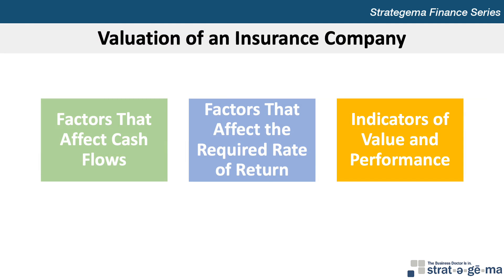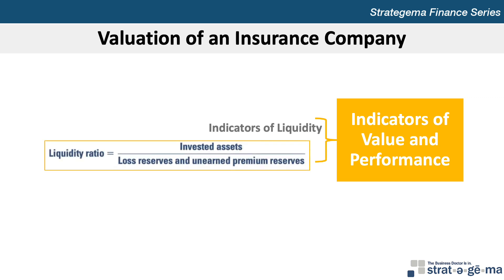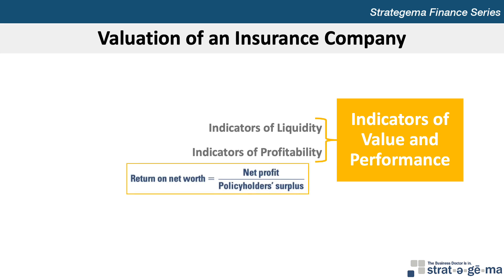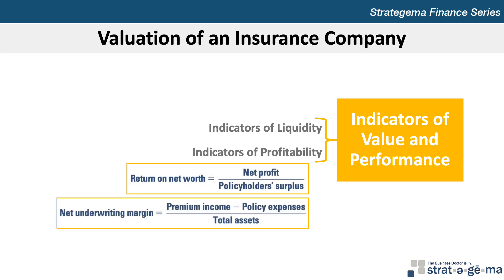The common indicators of value and performance for insurance companies include liquidity and profitability. An insurance company's liquidity can be measured as the invested assets divided by the loss reserves and unearned premium reserves. The higher the ratio, the more liquid the company is. The profitability of insurance companies is often assessed using the return on net worth or policyholder's surplus, calculated as net profit divided by the policyholder's surplus. Another common measure for insurance companies is the underwriting gains, calculated as premium income less policy expenses, divided by total assets. When policy expenses exceed premium income, the net underwriting margin is negative. As long as other sources of income can offset such a loss, however, net profit will still be positive.